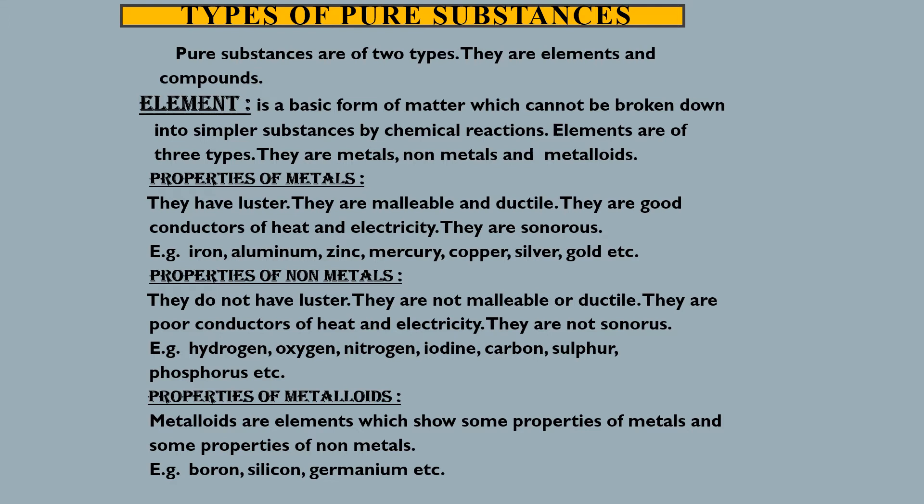Properties of metals are: they have luster, they are malleable and ductile, they are good conductors of heat and electricity, and they are sonorous. Examples include iron, aluminium, zinc, mercury, copper, silver, and gold.